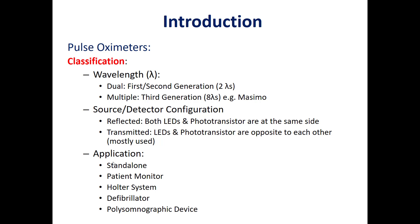We measure the SpO2 or blood oxygen saturation along with other parameters. This is available in patient monitors and vital signs monitors. We can also have a pulse oximeter as a Holter system, used to record oxygen saturation over a long period, like 24 hours or more — one, two, or three days depending on the application.